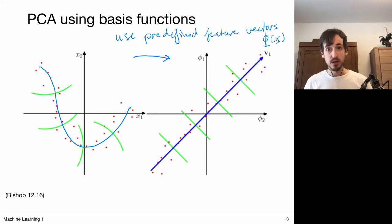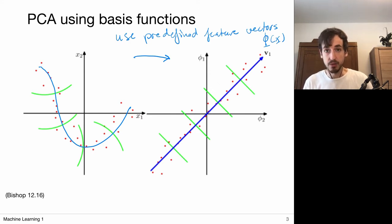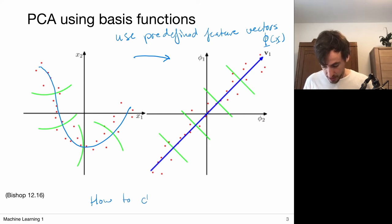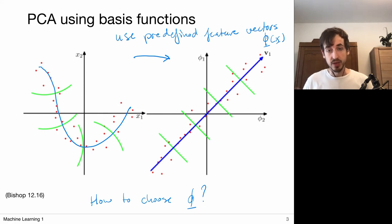Of course, this is super complicated because how are you going to choose your basis functions? To be honest, it's hard to imagine which type of basis function or feature factors to pick that would turn this into a linear problem. But in principle, this is possible. The challenge remains how to choose your basis functions. One way to go about this is to learn your basis functions via neural networks, which is something I'm going to show in one of the next slides.